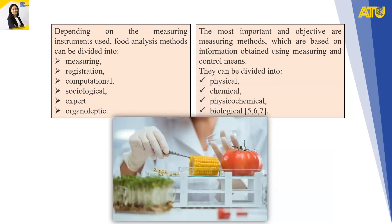Depending on the measuring instrument used, food analysis methods can be divided into measuring, registration, computational, sociological, expert, and organoleptic methods. The most important and objective are measuring methods, which are based on information obtained using measuring and control instruments. These can be further divided into physical, chemical, physicochemical, biological, and other categories.